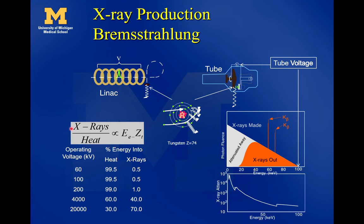We have a simple equation for x-ray production. The ratio of x-ray production versus heat production is proportional to the energy of the accelerated electrons crashing into the anode, multiplied by the atomic number Z of the target material. So if we use higher-Z materials — for example, tungsten has a Z of 74 — we get better x-ray production. If we ramp up the accelerating voltage of the electrons, we'll get more x-rays produced instead of heat.